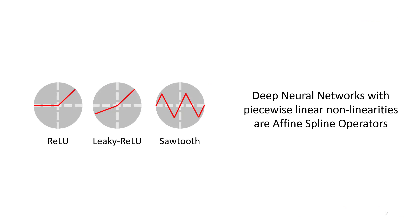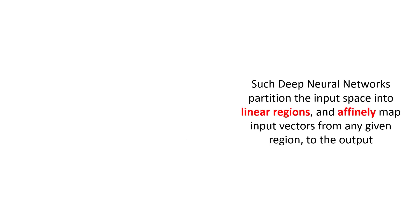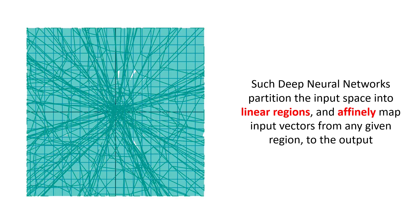Deep neural networks with piecewise linear activations like leaky ReLU or sawtooth are affine spline operators, which means a DNN partitions its input space into linear regions and affinely maps input vectors from any given region to the output.